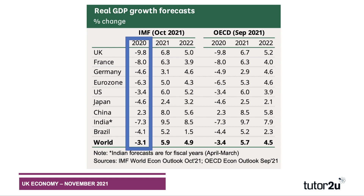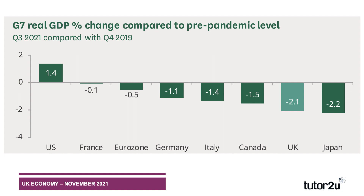Germany's fall was less than half that of the UK's; the United States was only about a third of our fall in output. China continued to grow, although at much slower rates. The world economy in 2020 shrank by just over 3%, but it is forecast to grow by nearly 6% in 2021. Economies are rebounding quite quickly, and of course that's one of the factors behind the surge in cost-push inflation.